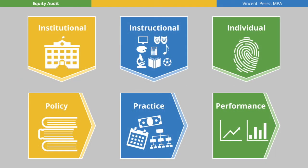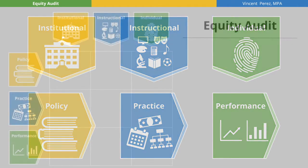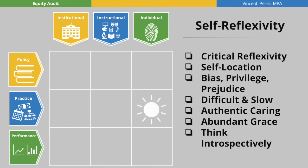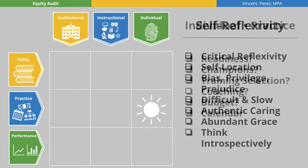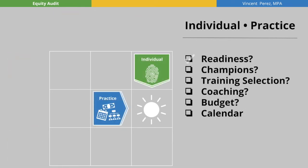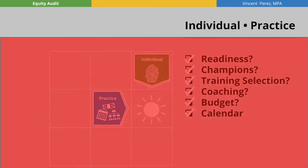In synthesizing the theoretical frameworks, the equity audit was established with nine areas for consideration. Often, equity work consists of self-reflexivity whereby a trainer may be brought in to consider this practice. However, have we thought about the readiness? Who's already doing the work? How is the trainer selected? Will there be ongoing coaching? And finally, is it budgeted and calendared for the future?